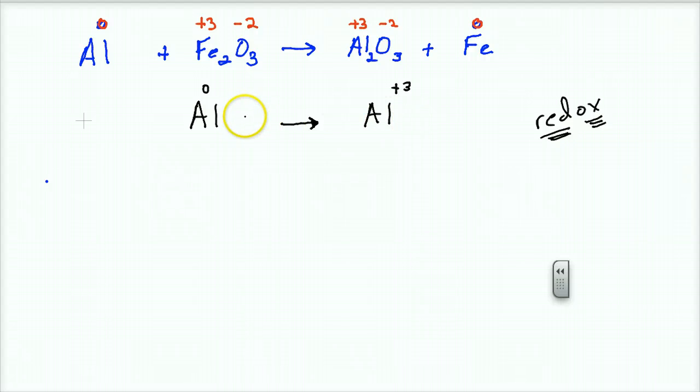So aluminum goes to aluminum plus three. But how did that happen? How did a zero become a plus three? Well, I can't change proton numbers because the chemical symbol is staying the same. So obviously this lost some electrons. And that number, of course, would be three electrons.